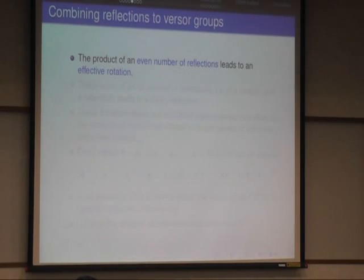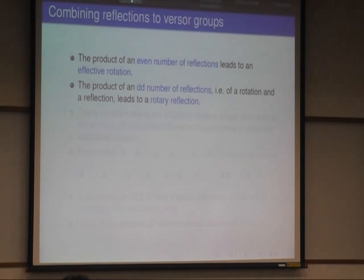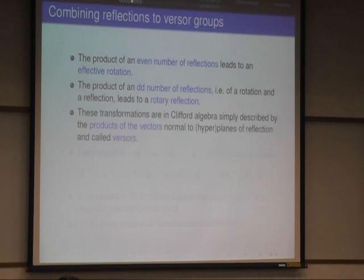Now combining reflections, you can make groups. And so if you take an even number of reflections, you always get an effective rotation. If you take an odd number of reflections, it will give you a rotation followed by a reflection that's also called rotary reflection. So these transformations in Clifford algebra are simply described by products of vectors, all normal to the hyperplanes, which you use for the reflections. Products of vectors, they are versors. So here I have such a versor, a product of vectors, A1 to AR. And the inverse is simply the reverse order and the inverse of each vector. So that makes this A inverse here.